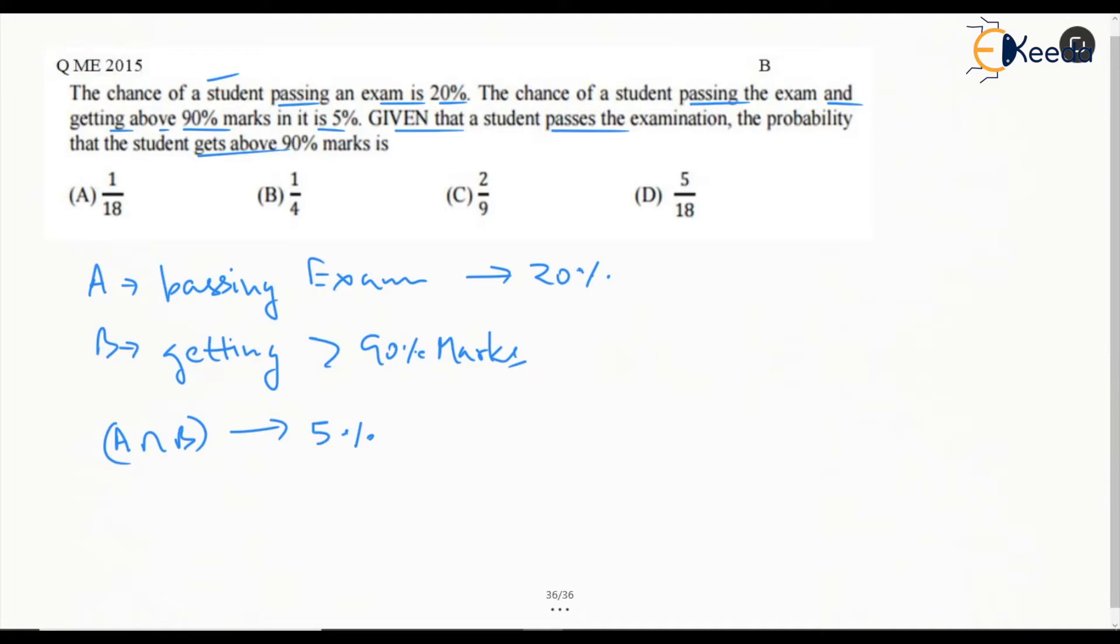What they are looking for is given that a student passes the exam, given that A has already occurred, the probability that the student gets above 90%, the probability of B. Given that A has already occurred, what is the probability of B? Where probability that A and B both occur together is given by this value.